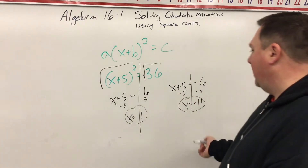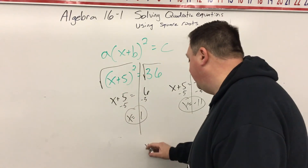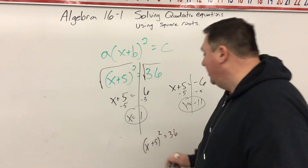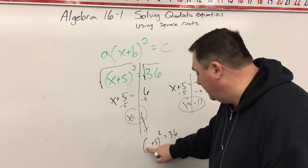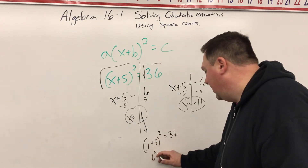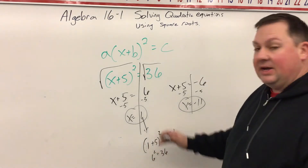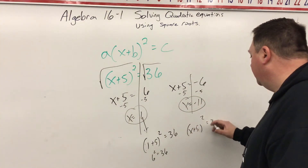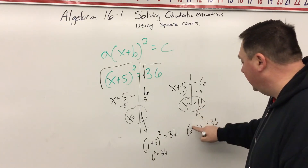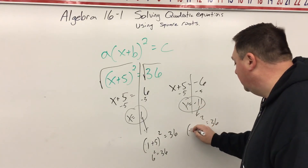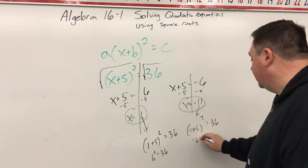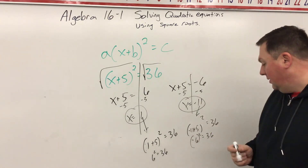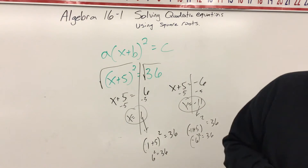You can always double check this by plugging the answers back into the equation. So if you have (x + 5)² equals 36 and plug in x equals 1: (1 + 5)² equals 6² equals 36. That works. Now plug in x equals negative 11: (negative 11 + 5)² equals (negative 6)² equals 36. So it is true. That's how you can double check those.